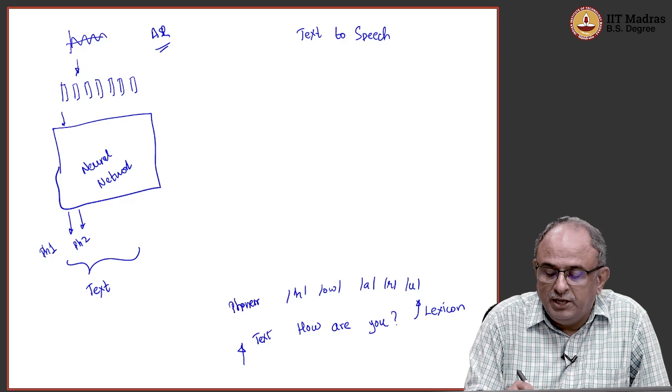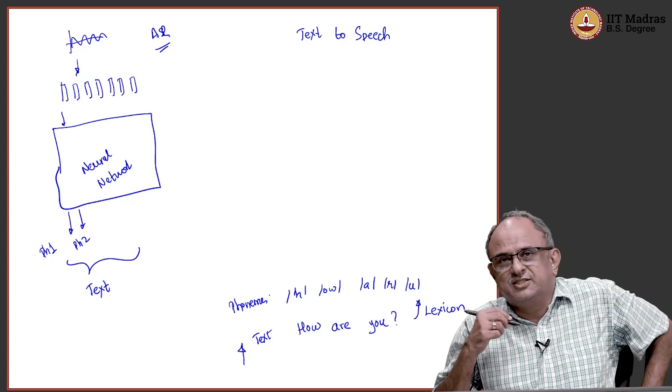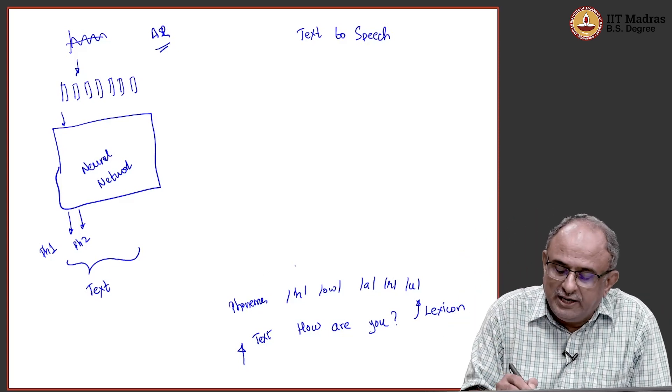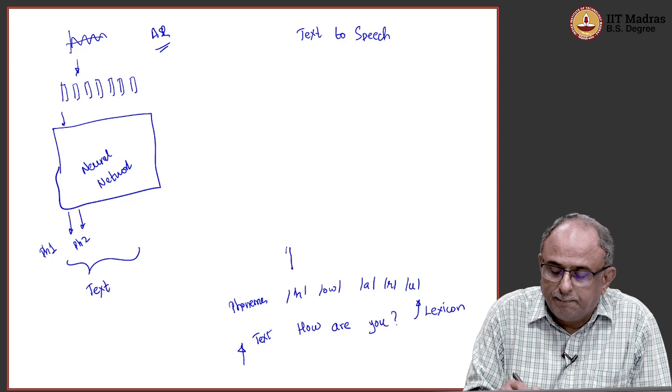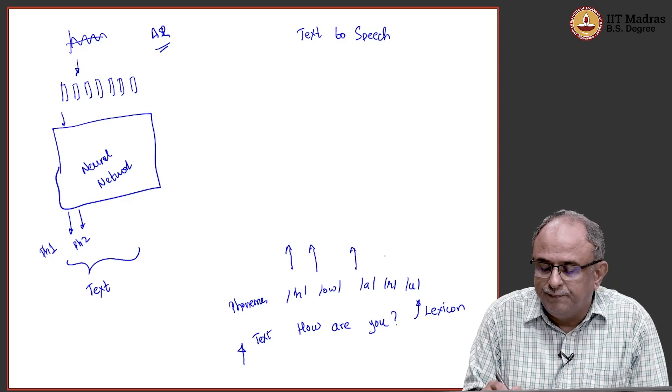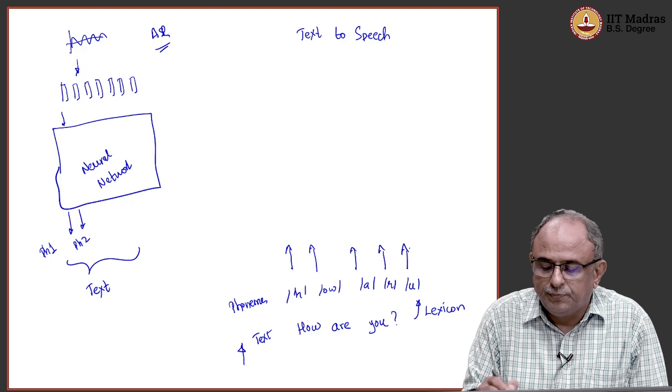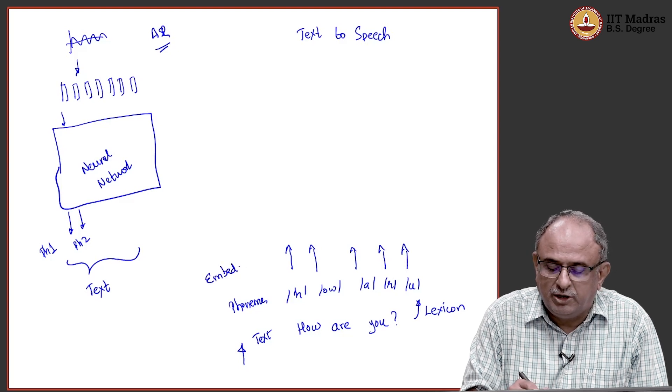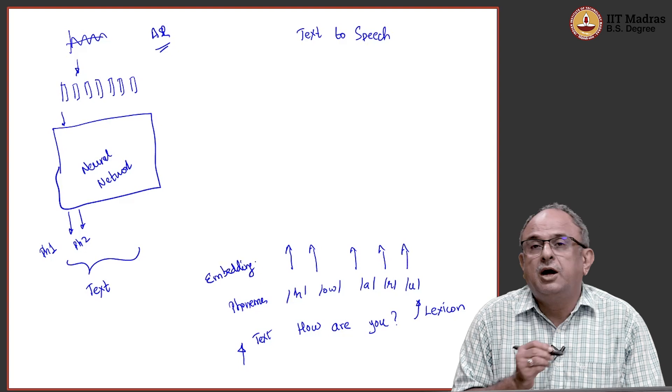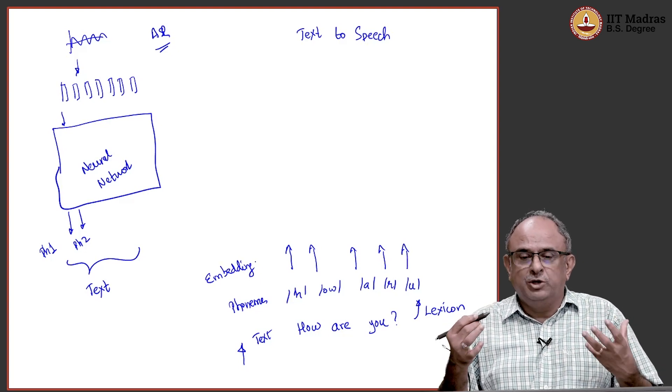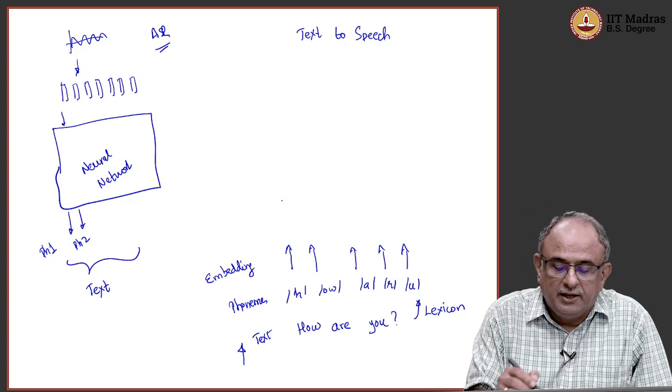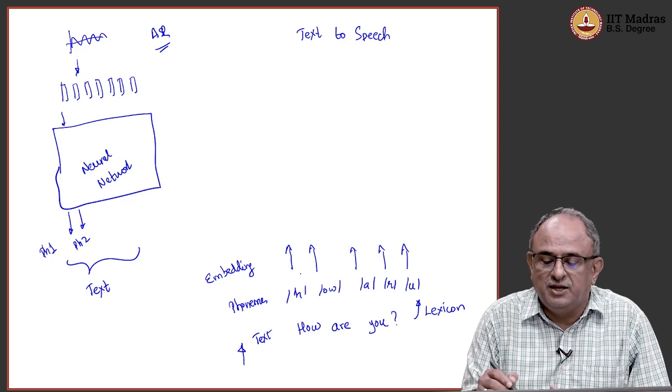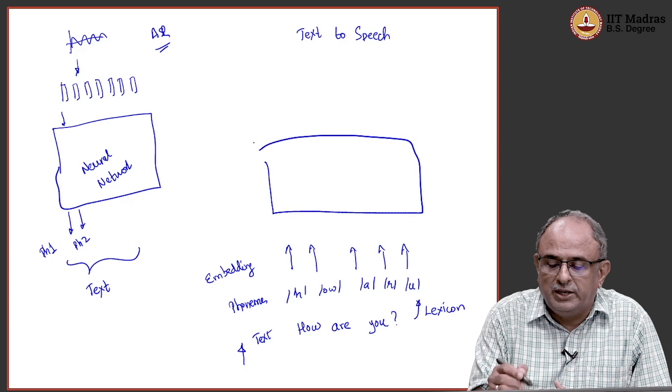Now, phonemes by themselves are just some characters or something, some representation, like your word units. So, I have to create embeddings here for each one of them. This is an embedding. Now I have got it into a form that is only numbers. Similar to whatever you did for word embeddings, I can do the same thing here.